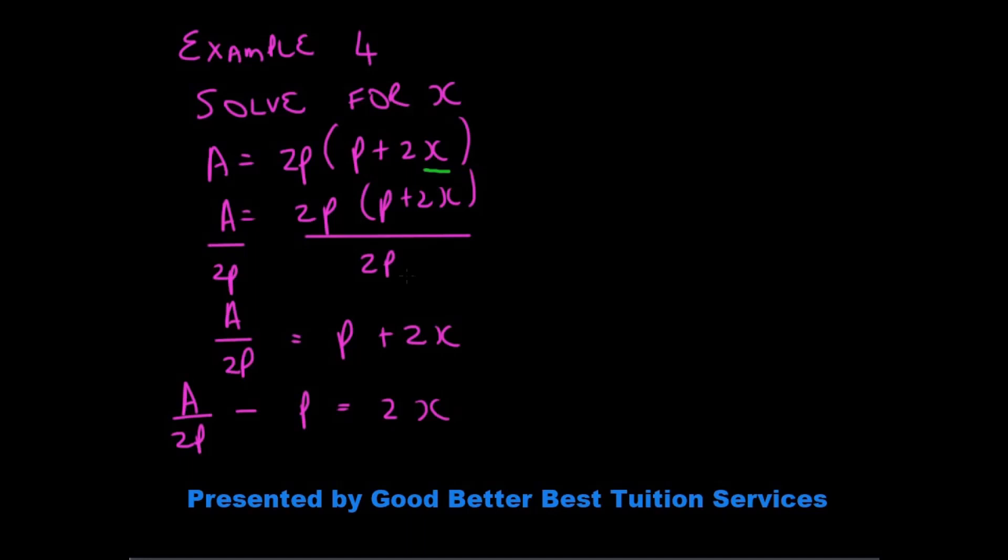And 2p divided by 2p will cancel and we are left with a over 2p on the left hand side. And here we have a over 2p is equal to p plus 2x.